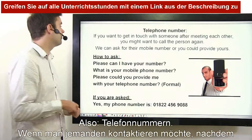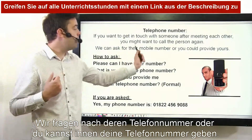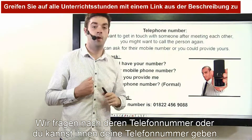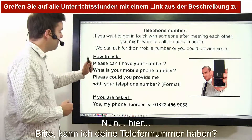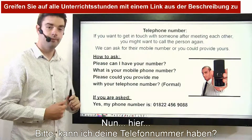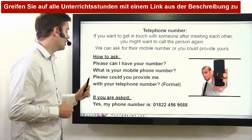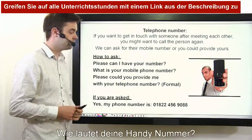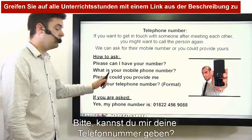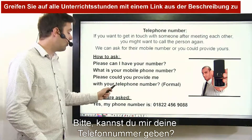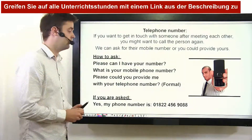Now, telephone numbers. If you want to get in touch with someone after meeting each other, you might want to call the person again. We ask for their mobile number, or you could provide them with yours. How do we ask for a phone number? You can say: Please can I have your number? What is your mobile phone number? Or, more formally: Please could you provide me with your telephone number?